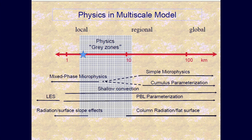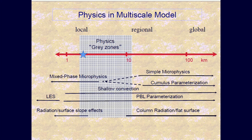As you get down to convective permitting scales — about 4 kilometers — we drop the cumulus parameterization and just use the microphysics and resolved dynamics to estimate clouds, while retaining shallow convection and a PBL parameterization. When people talk about downscaling, you're essentially taking model output from regional and global models and downscaling to local scales. You either do dynamical downscaling, statistical downscaling, or a hybrid approach.